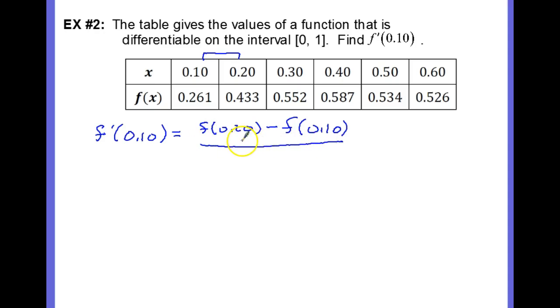So we'll continue using our average rate of change. This would be the slope of the line through these two points, 0.1 and 0.261, 0.2 and 0.433. And so we have f of 0.2 minus f of 0.1 over 0.20 minus 0.10.